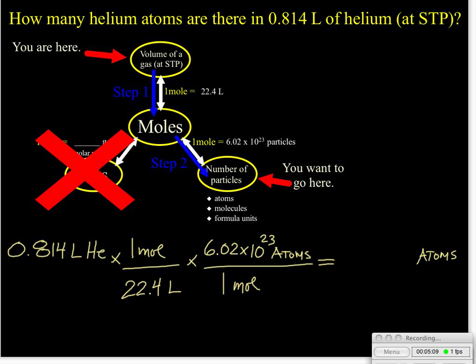Now we look and we say we've cancelled our liters. We've cancelled our moles. We're left with the units of atoms. And now we can use our calculators to come up with our final answer of 2.19 times 10 to the 22nd atoms.